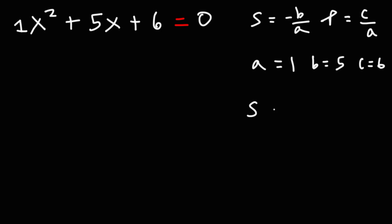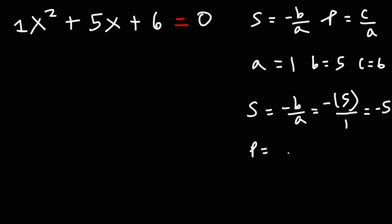Using the formula, the sum is going to be negative b over a. b is positive 5 and a is 1, so the sum is negative 5. As for the product, it's positive c over a. c is 6 and a is 1, so the product is 6.